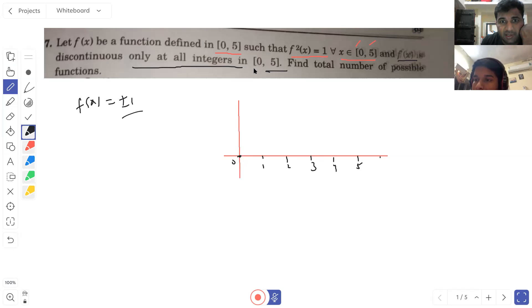And we are talking about discontinuity in a closed interval. So what does it mean? Zero is discontinuous and five is discontinuous.